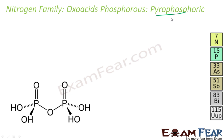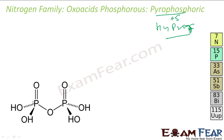Pyrophosphoric acid has the formula H4P2O7. The oxidation number of phosphorus is (14 − 4) / 2 = +5. It is a tetraprotic acid — looking at the structure, there are four OH groups.